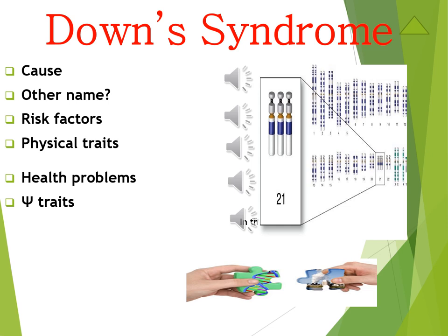If a Down syndrome individual has an extra 21st chromosome, how many chromosomes would we find in a typical body cell? Many students say 48 or 49, but no — instead of having a pair for the 21st, they have three, so just one extra chromosome. Since the typical body cell has 46 chromosomes, the answer would be 47.